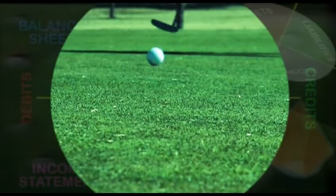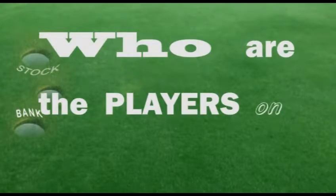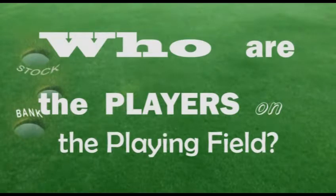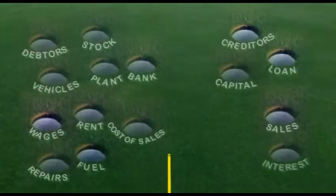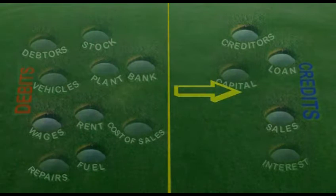Welcome to the playing field. This is no ordinary field — it can have any number of pockets situated all over the area. These are not just ordinary holes; each one has a name, and they can add. As with any playing field, there is a centre line. To the left we have the debit players, and to the right, the credits.